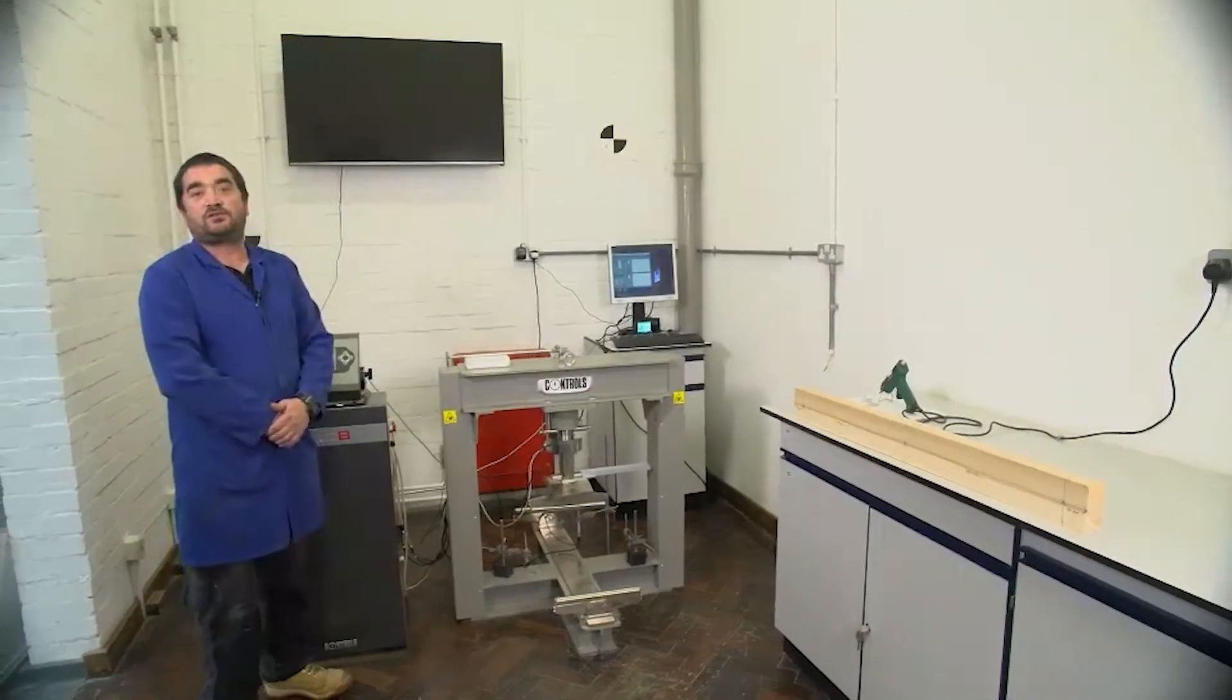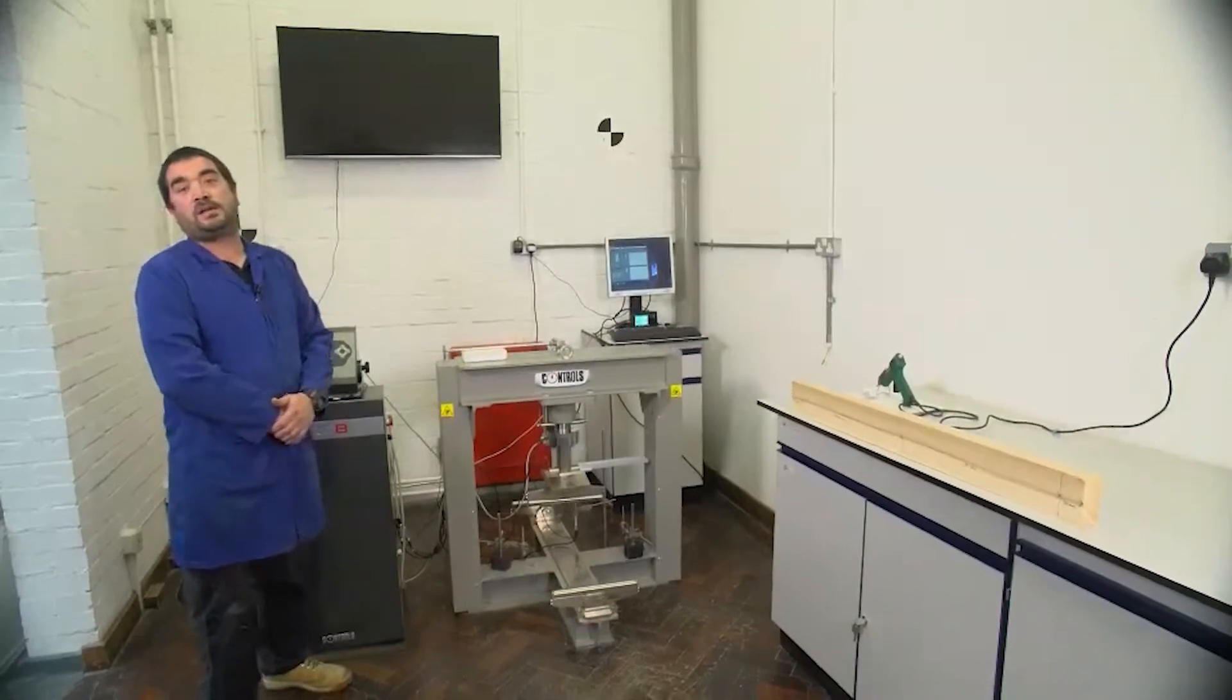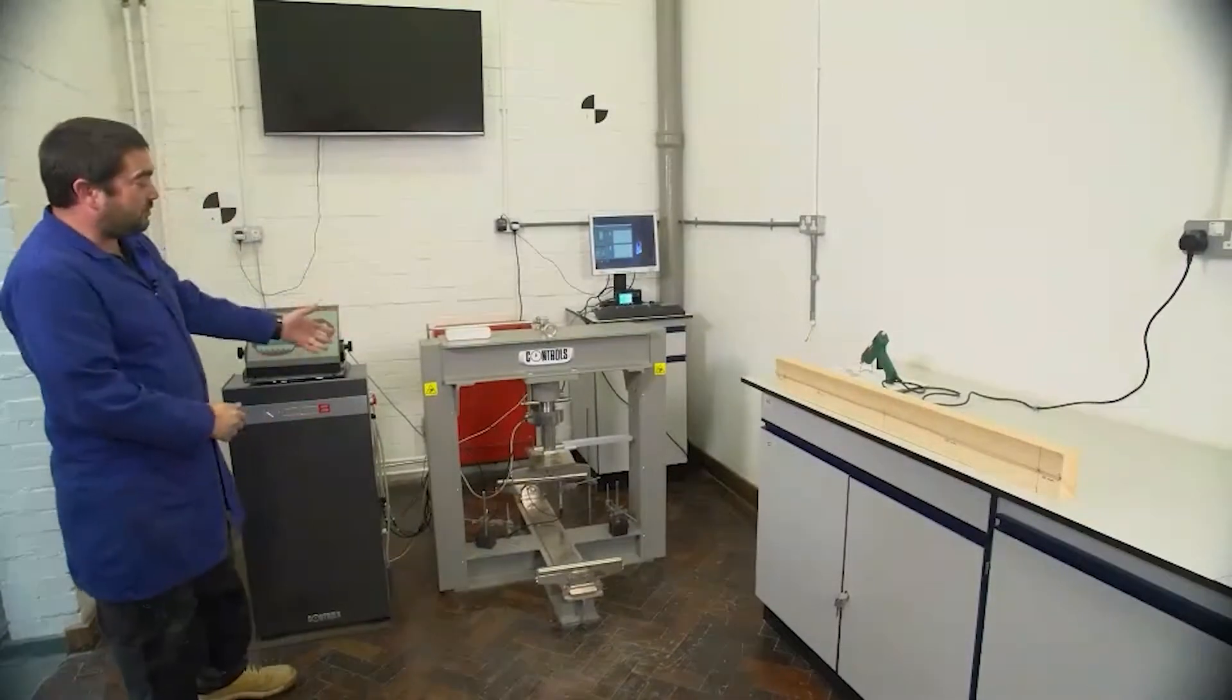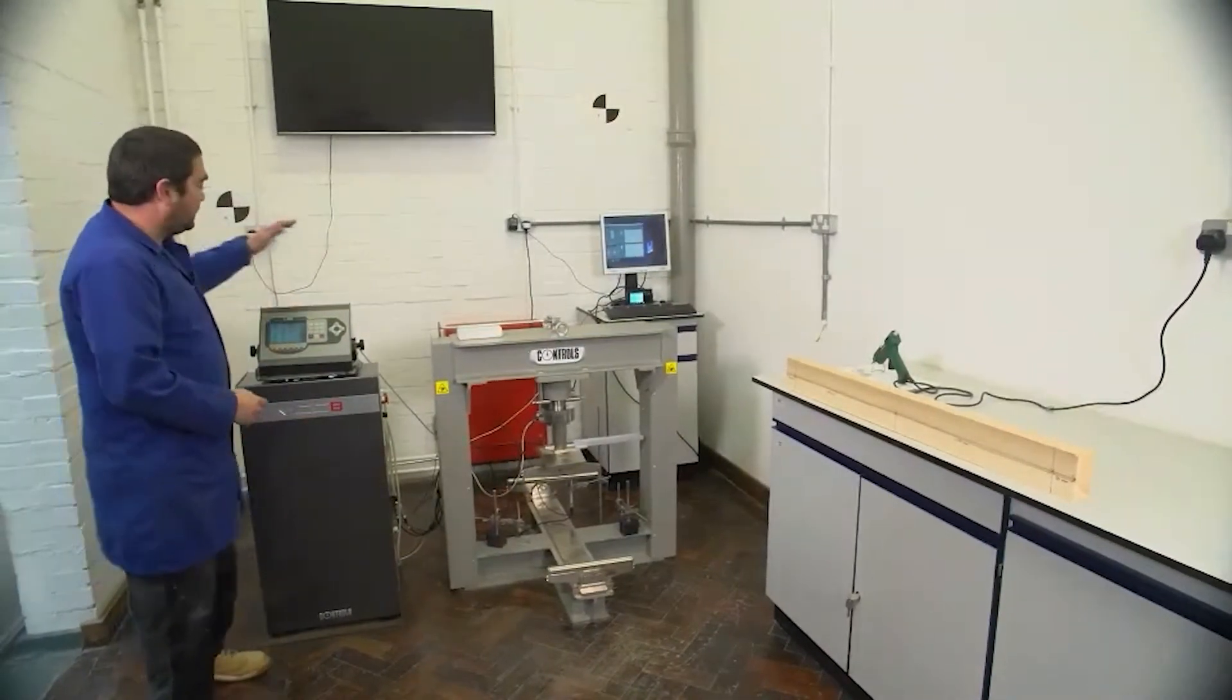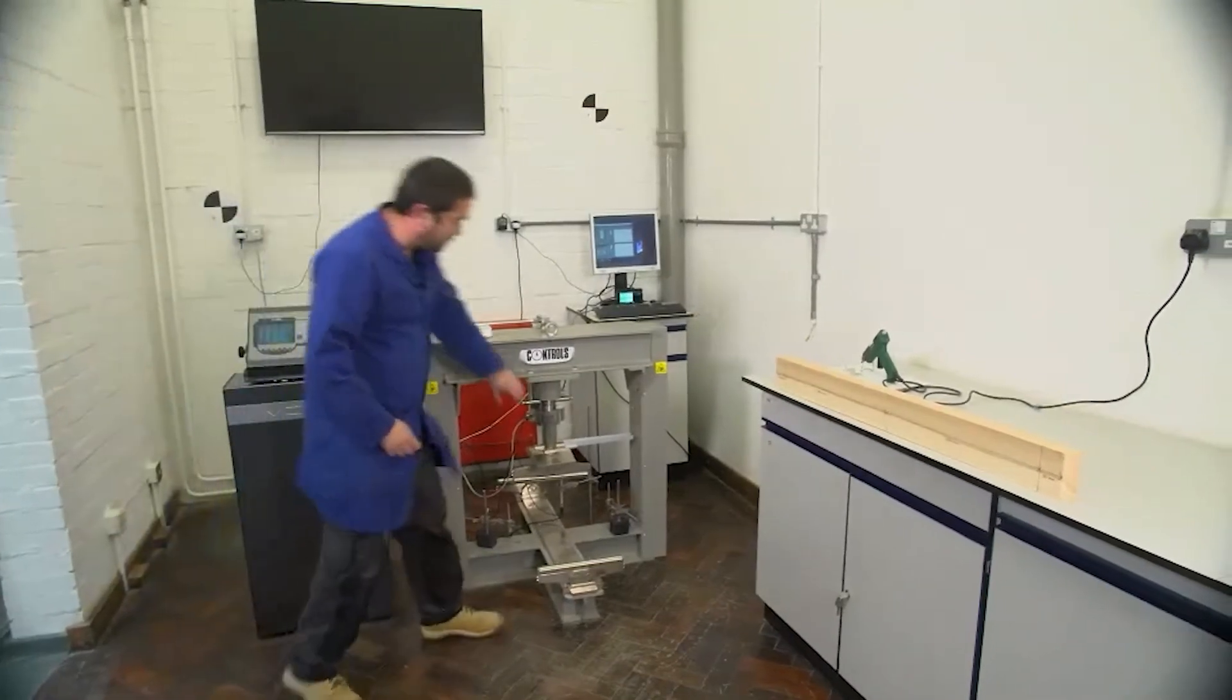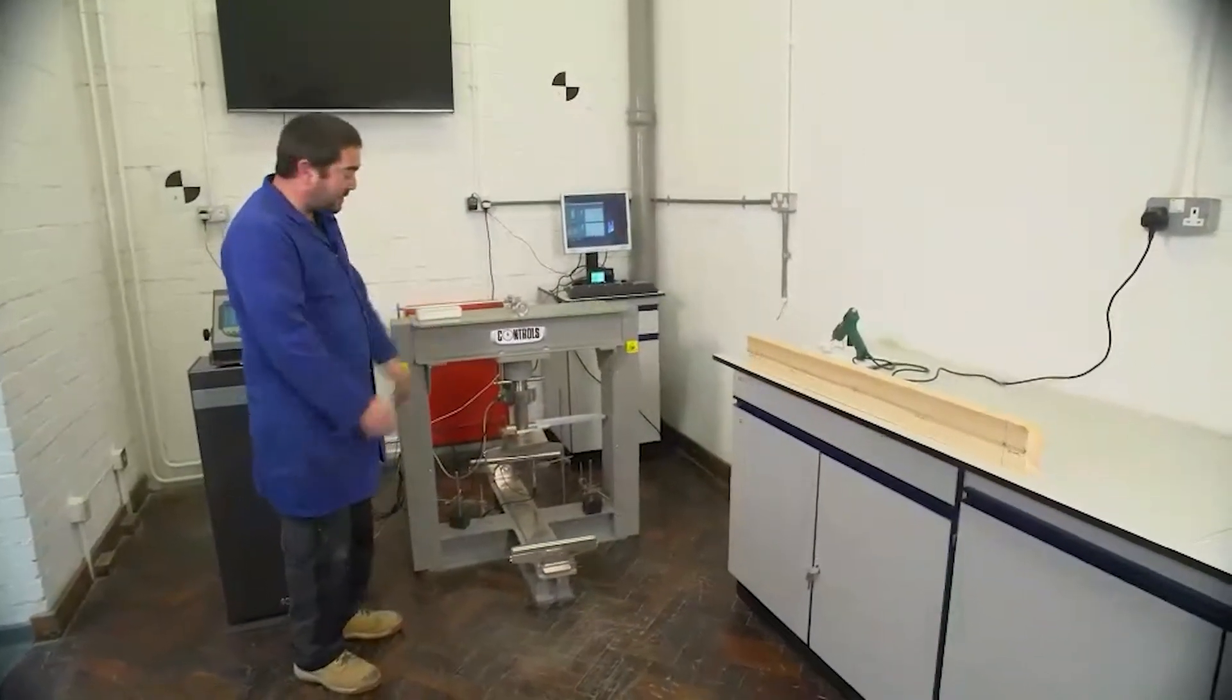Hello. Welcome back to the Structures Lab. And today we're going to be doing a three-point loading test on timber and steel. And to do that, we're going to be using another universal testing machine. This time from Controls. So this here is our hydraulic pump and controller. And that operates our ram. And we've got this set up into a three-point bending test.